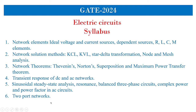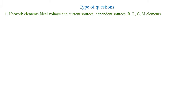Finally, two-port networks whether AC or DC. In gate exams they are asked for two marks and one mark. All these problems we are going to solve in coming classes — all problems which have occurred until 2023 — to understand the concepts in depth and in an easier way to solve future gate exam problems. We start with network elements: ideal voltage sources, current sources, dependent sources, and RLC parameters.